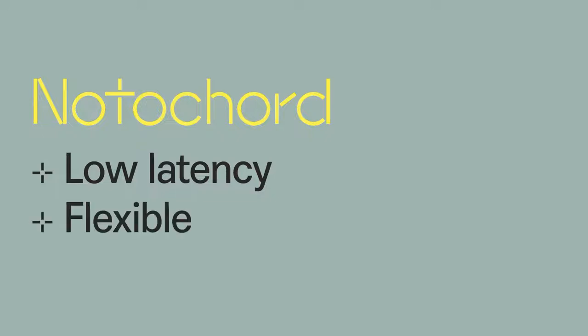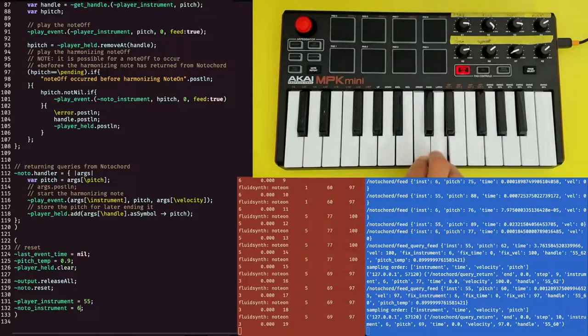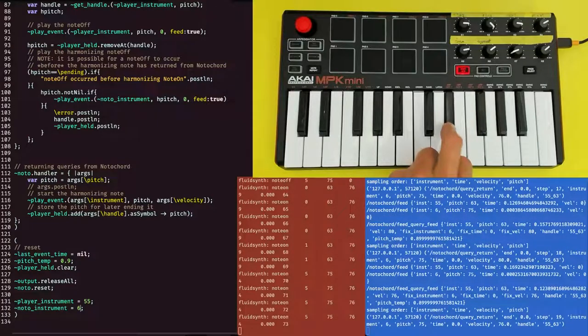The other property is what we call flexibility. When Notochord is generating a MIDI stream, it lets you make precise and interpretable queries on the next event. For example, you can require that the next event in a performance have a pitch class of C, while Notochord chooses the register, timing, and velocity. Or, you might want it to occur no sooner than 100 milliseconds from now, which Notochord will consider when choosing which instrument plays next. An instrument designer can program this kind of intervention, and a performer can then make it in real time.